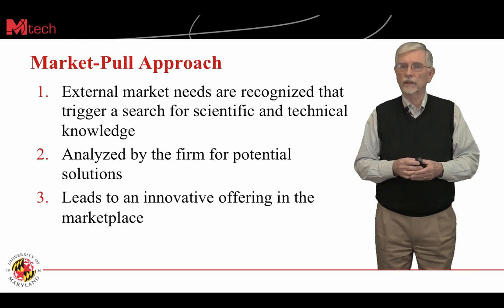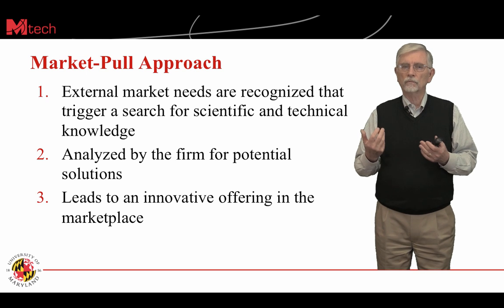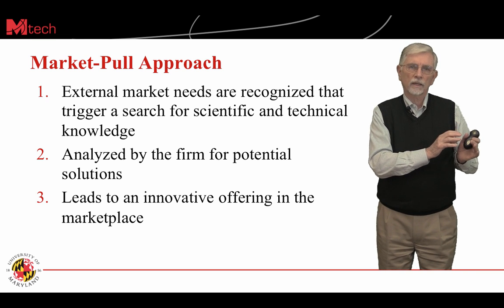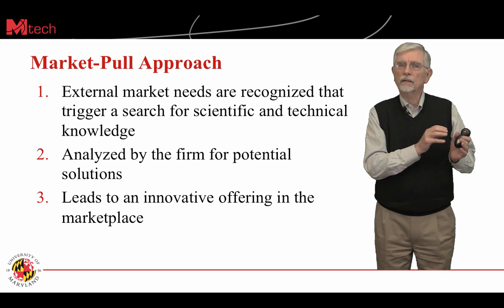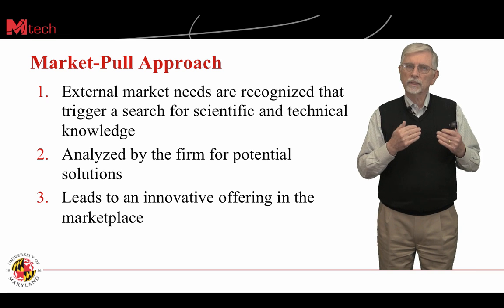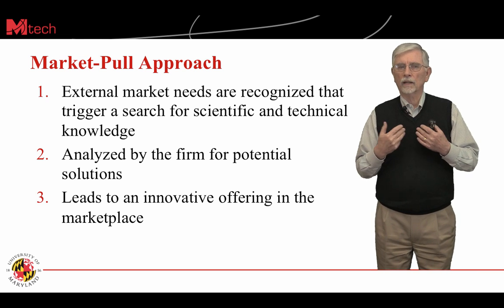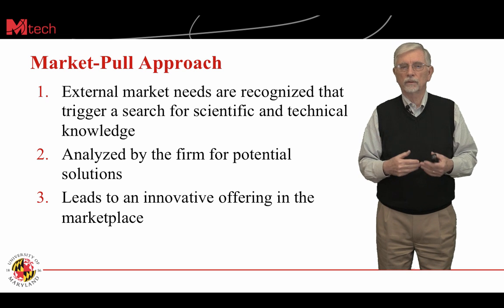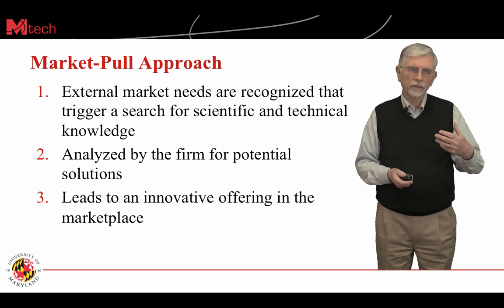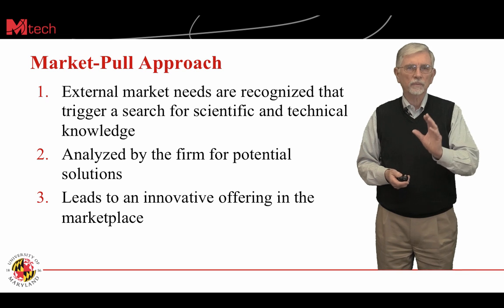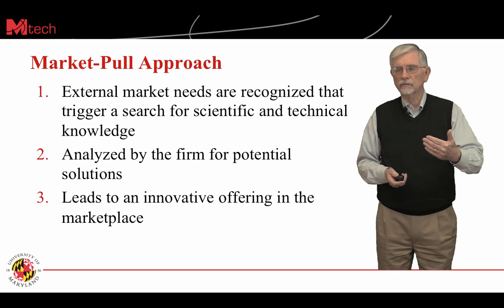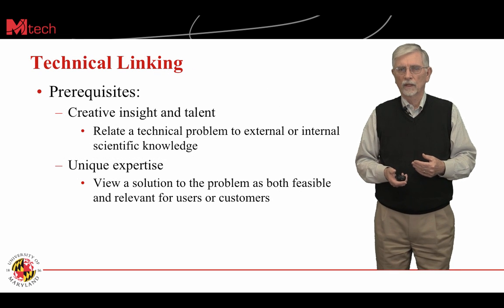Market pull develops in just the other way. You start with understanding external market needs, recognizing them as a trigger for possible search of technology and scientific knowledge that might help solve that problem. You're really starting with external needs and marketplace needs, analyzing them for potential solutions, and you build an innovative offering for the marketplace — taking ideas from the marketplace, looking for technology solutions, and responding with an innovative solution that is directly responsive to the marketplace.